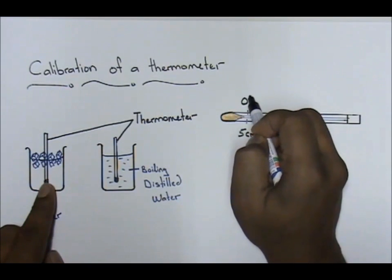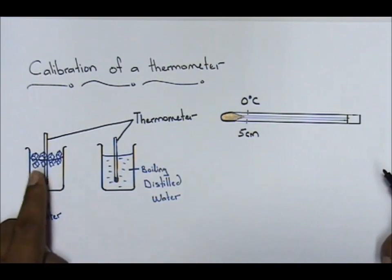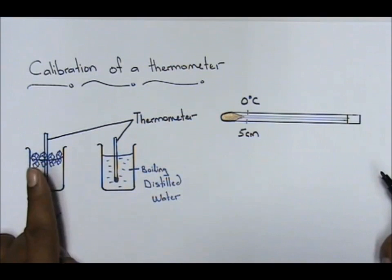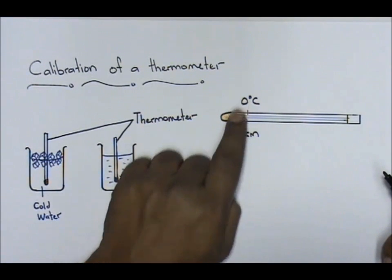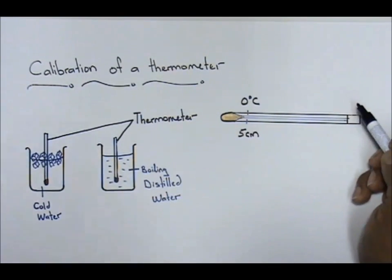Now, cold distilled water will give you a temperature of 0 degree Celsius. Cold distilled water - the freezing point of water will be 0 degree Celsius, and the melting point of ice is also 0 degree Celsius. So distilled water, 0 degree Celsius, and the mercury will go all the way up to 5 centimeters.